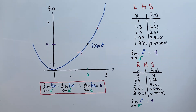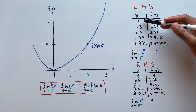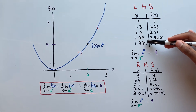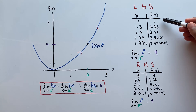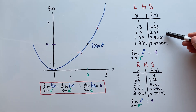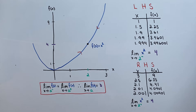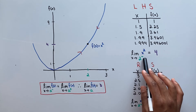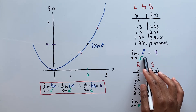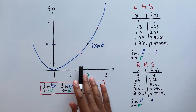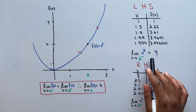One way we can do it is by looking at a table. So let's look at our left-hand side first. From the table, you can see that as we increase our x value to 2, our f of x also gets closer or approaches 4. Therefore, we can say that the limit of our function as x approaches 2 from the left side, which we denote with a negative sign because we're coming from the negative side of x, equals 4.